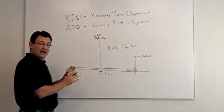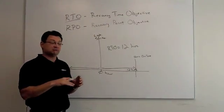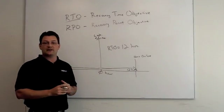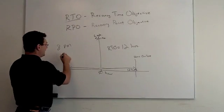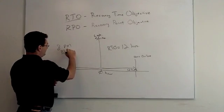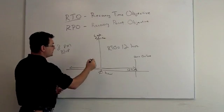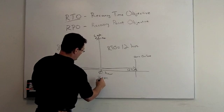So most companies back up their data once an evening. Usually they wait till the users go home and everybody's offline. Let's say 8 p.m. is when the last backup or copy was performed.